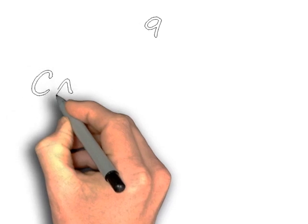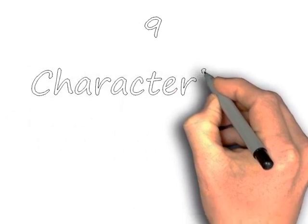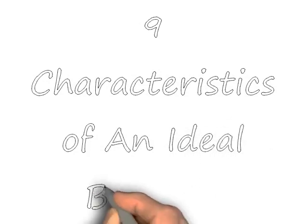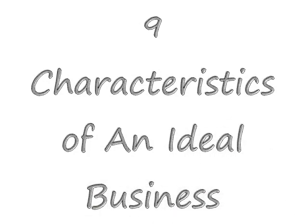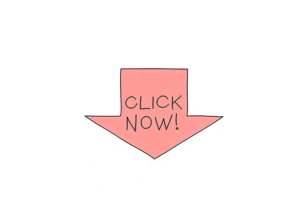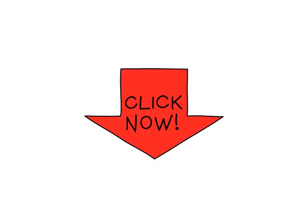There you have it. The nine characteristics of an ideal business. Thankfully, I've found a business that checks off all nine of these characteristics. And if you're looking for a way to spend more time with the people you love, doing what you want, when you want, where you want, and do it all without having a boss, then go ahead and click the link below. And I'll see you on the inside.